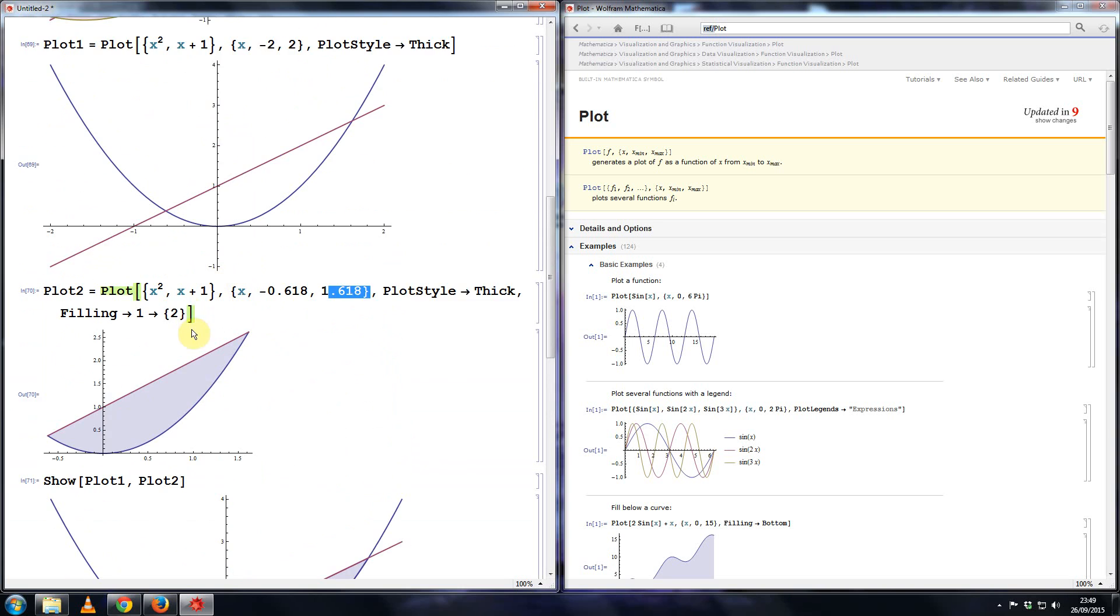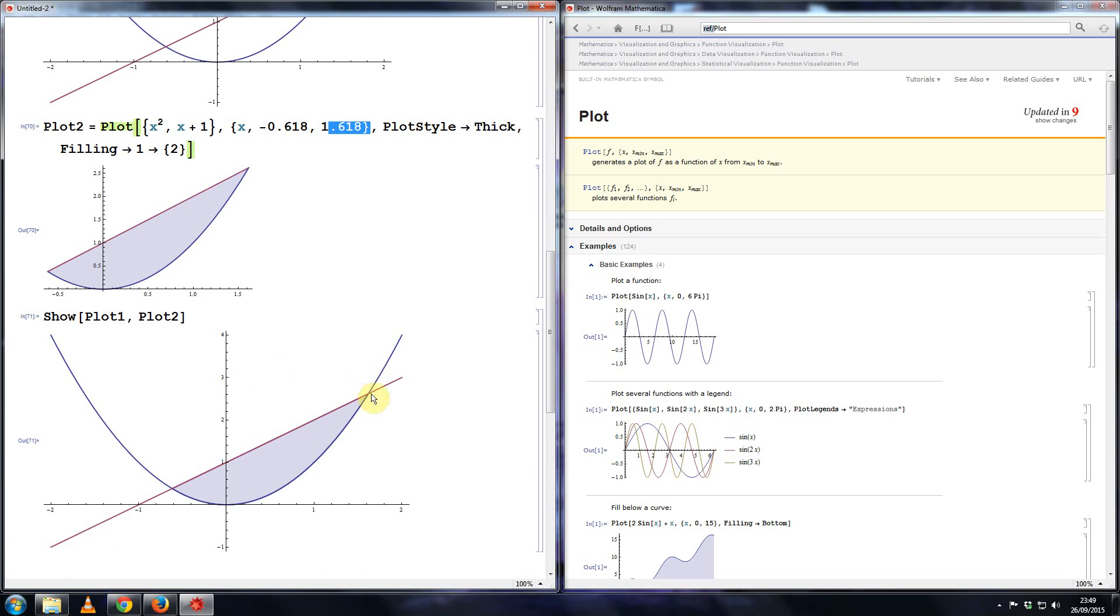And you can use the other functions as before. So if you had two or three of them, and you wanted to plot between two specific values, at least this is the only way that I know that it works. I don't know if there's any other way to achieve the same thing.